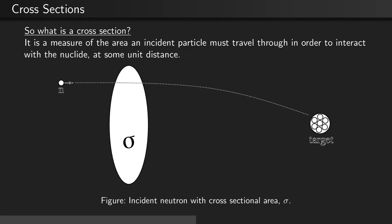So what exactly is a cross-section? A cross-section is a measure of the area an incident particle must travel through in order to interact with the nuclide at some unit distance.